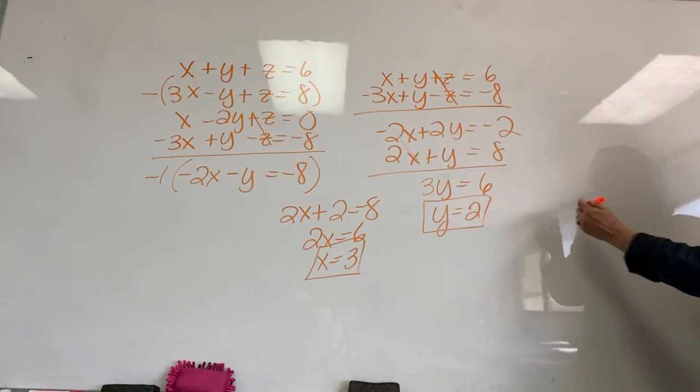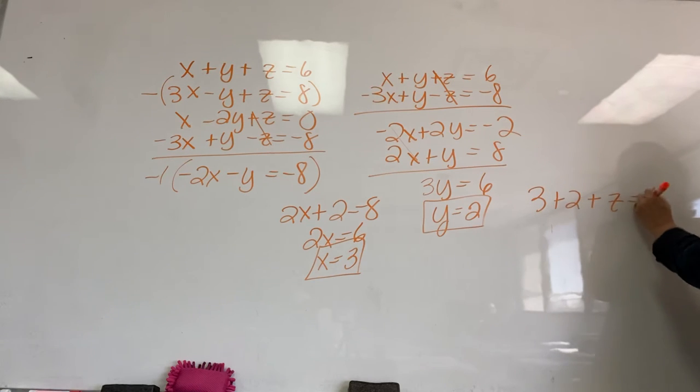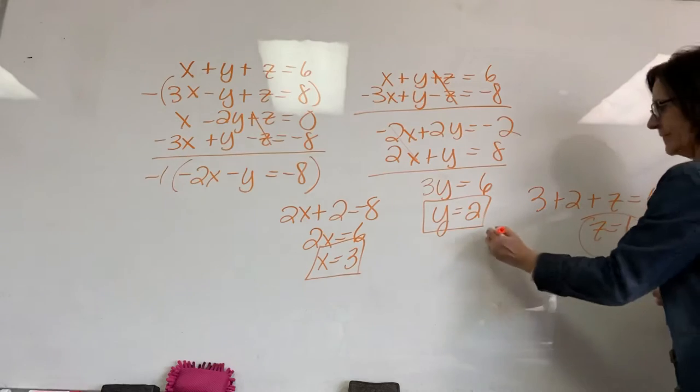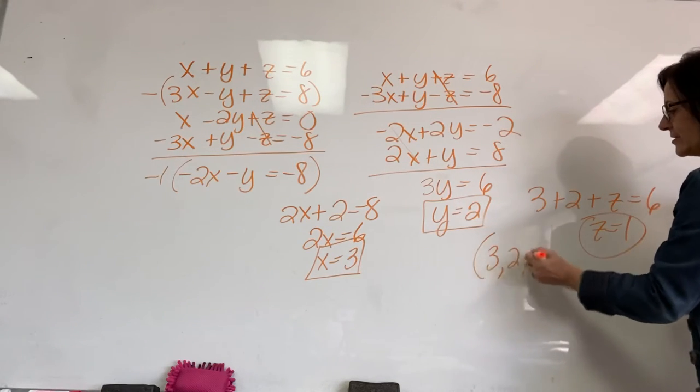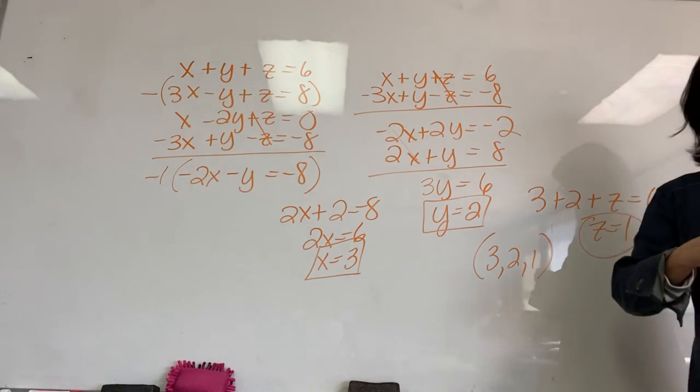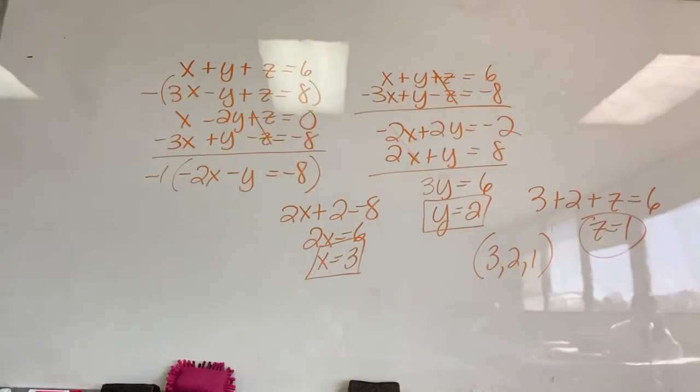I bet it is. Okay. We're going to go back to the first equation. 3 plus 2 plus Z equals 6. Yes. Z is 1. So, it's 3, 2, 1. That happens sometimes. More often than I, as I work through these. All right.